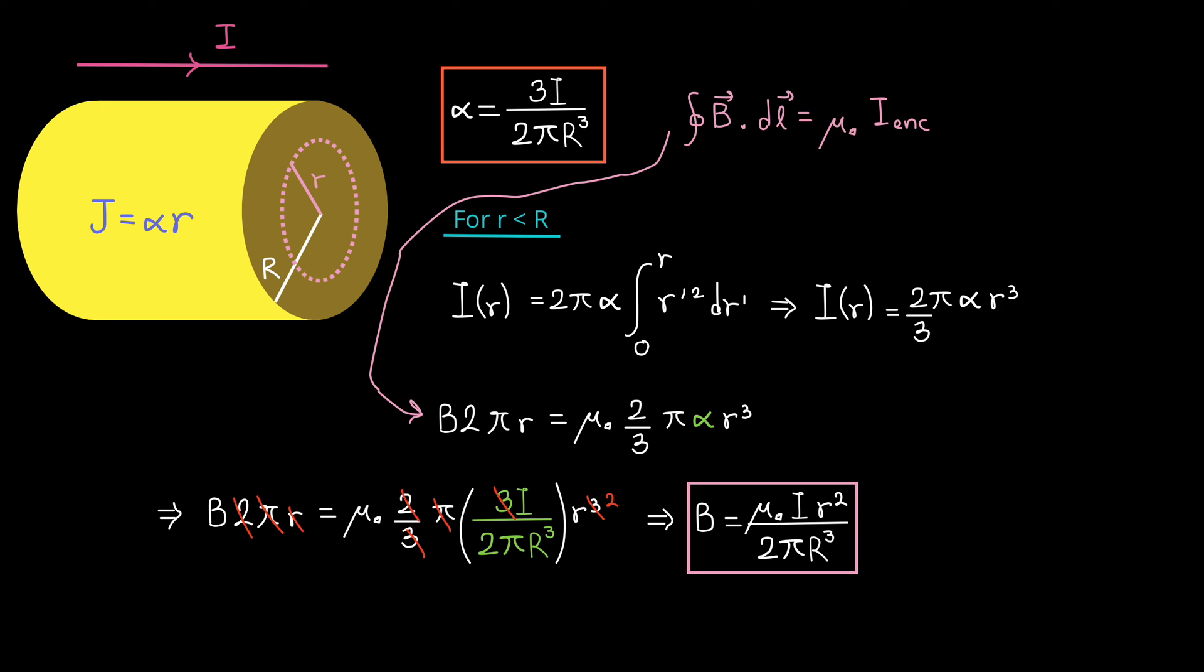After substituting the expression for alpha and after doing some algebra, we get this expression for B. You can see that B is proportional to the square of lowercase r. So B equals mu zero i, lowercase r squared, divided by 2 pi, capital R cubed.